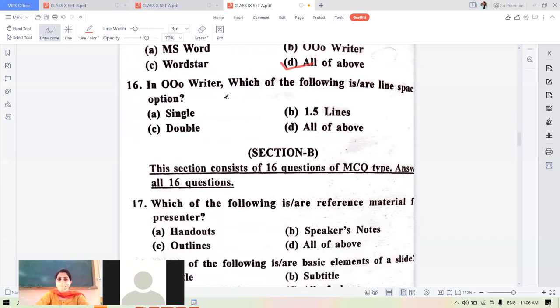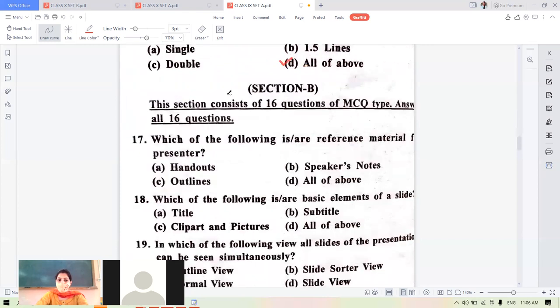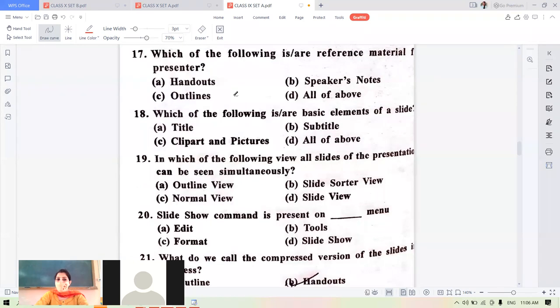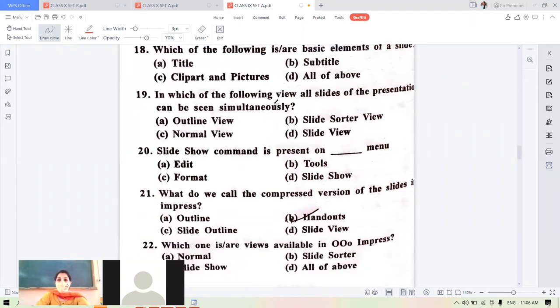Which of the following are word processors? MS Word, WordStar, OpenOffice Writer. All are examples of word processing, all of above. Which of the following are line spacing options? Single, double, one point five. Which of the following are the reference material for the presenter? Which of the following are the basic elements of a slide? Title, clipart, subtitle, all of above.